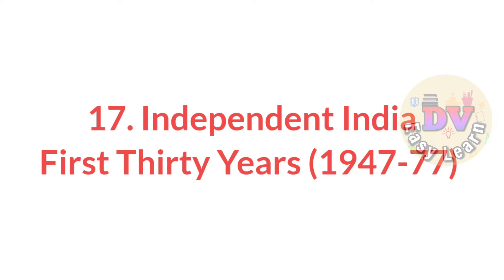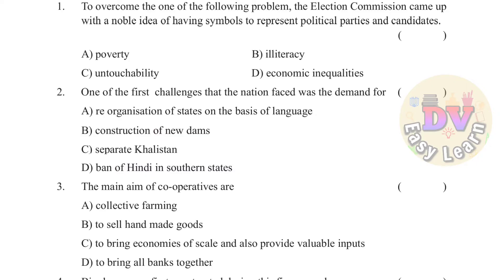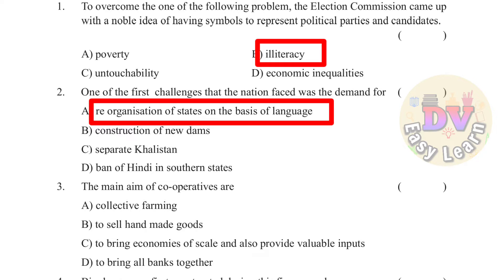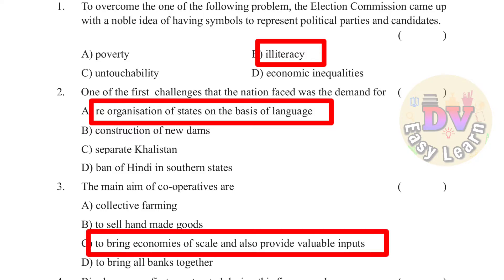Chapter 17: Independent India — The First 30 Years (1947–77). Question 1: To overcome this problem, the Election Commission came up with a noble idea of having symbols to represent political parties and candidates. Question 2: One of the first challenges that the nation faced was the demand for — Answer: Reorganization of states on the basis of language. Question 3: The main aim of cooperatives — Answer: To bring economies of scale and also provide valuable inputs.